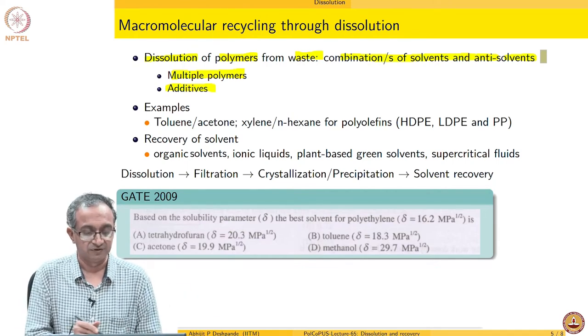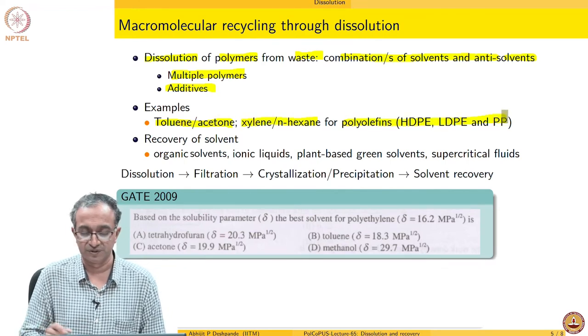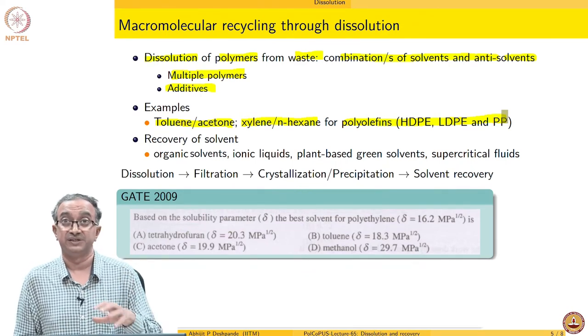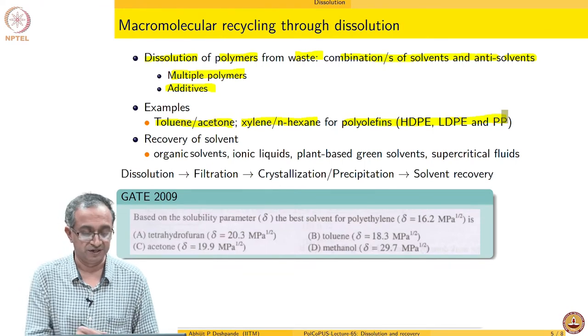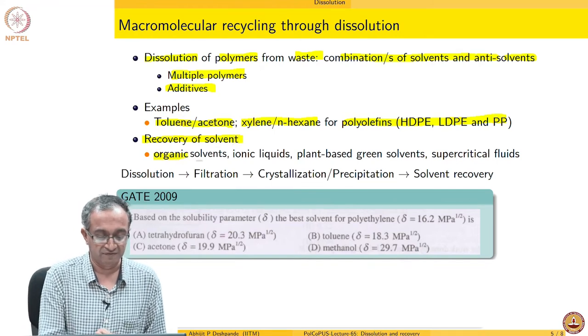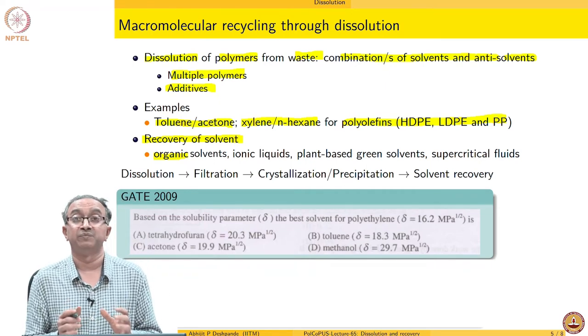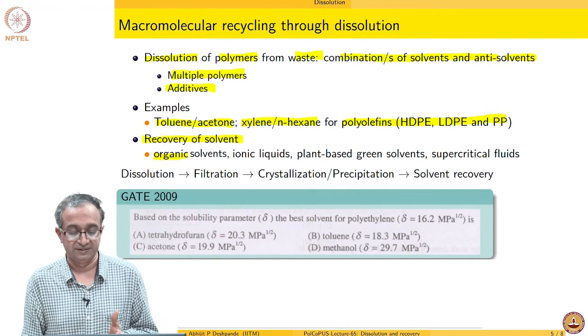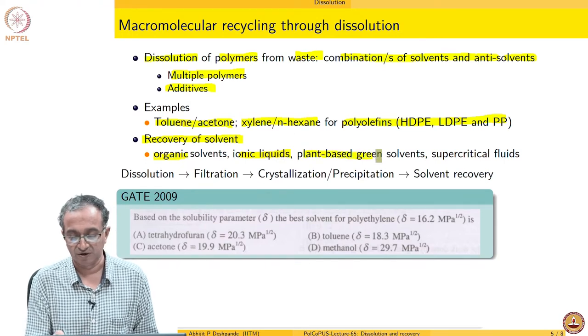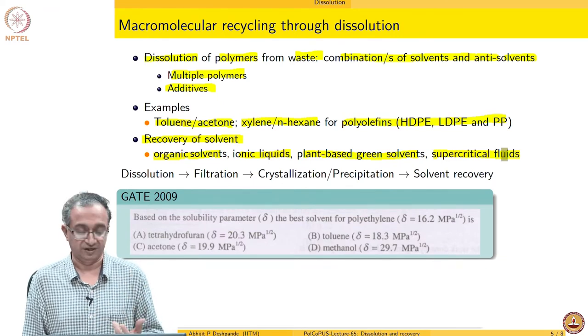For example, toluene/acetone or xylene/hexane are known good solvent systems for polyethylene and polypropylene. Of course, one of the problems in this process from a point of view of sustainability would also be the impact of the solvent itself. We could have organic solvents which are being used and the problem with them is related to the environmental impact. But therefore, there is a lot of work which is going on related to ionic liquids or plant-based green solvents or supercritical fluids to minimize the impact during this dissolution recovery process.